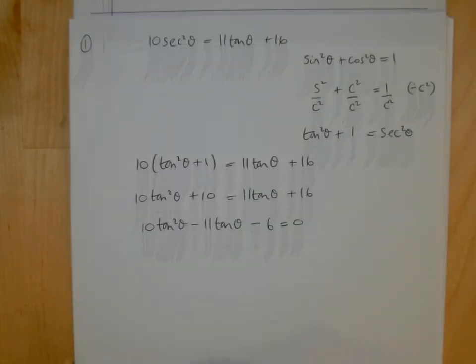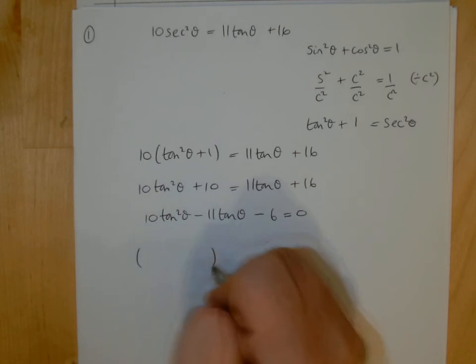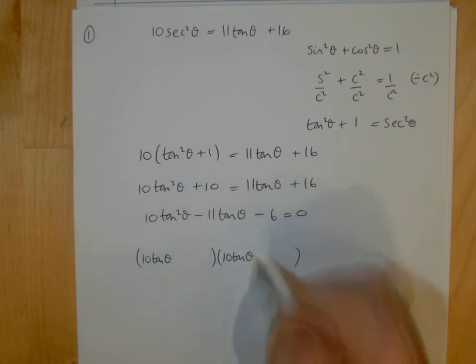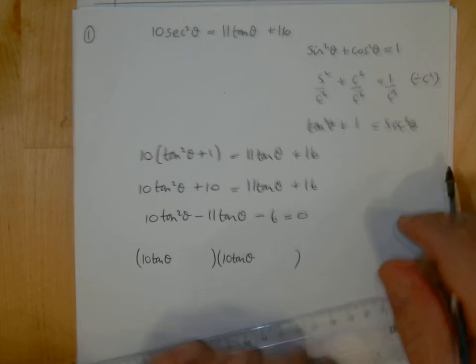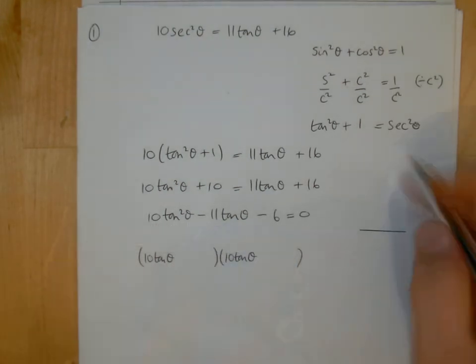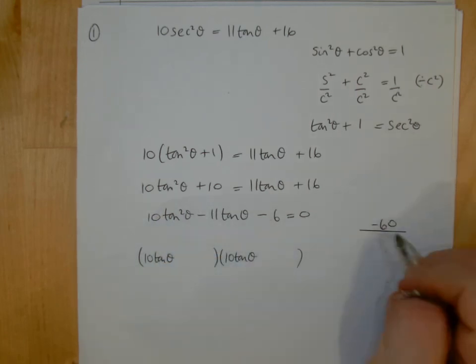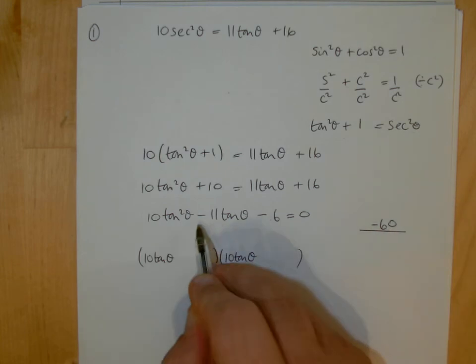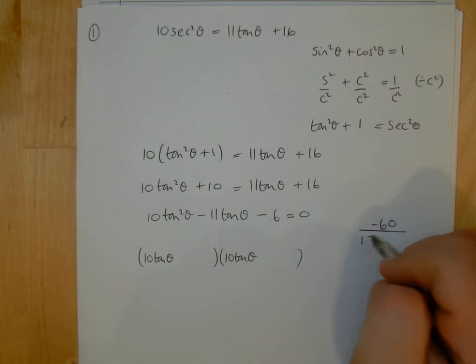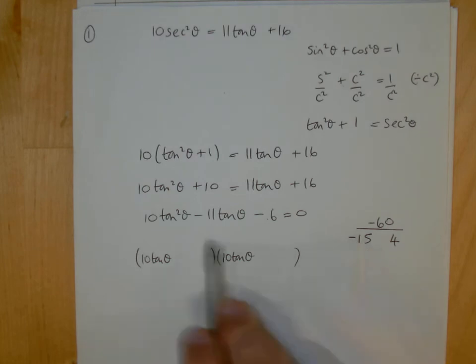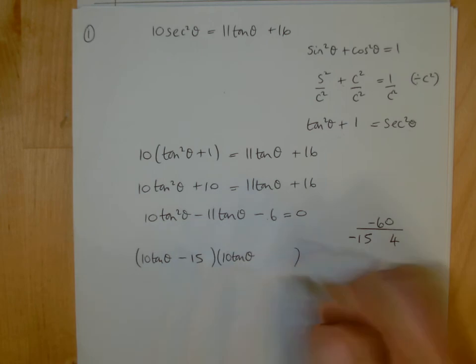If we do two brackets using the method we normally use in lessons, we write 10tan θ to start both. We think of a pair of numbers that would multiply to give 10 × -6, so -60, and add up to give -11. So it's going to be 15 and 4. But I've got to make that a negative 15. Put the negative in front of the bigger number because we've got negative here. That does multiply to give this and adds up to give -11. So -15 and 4.